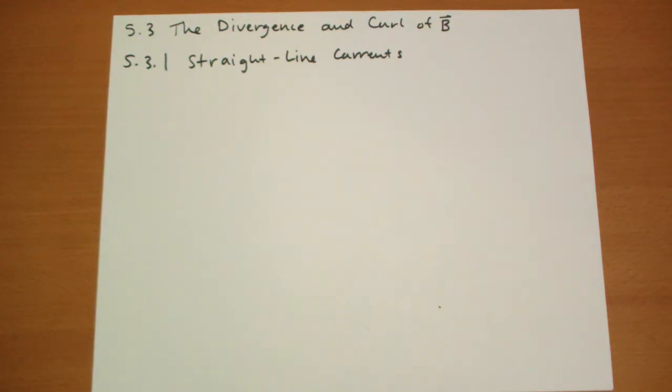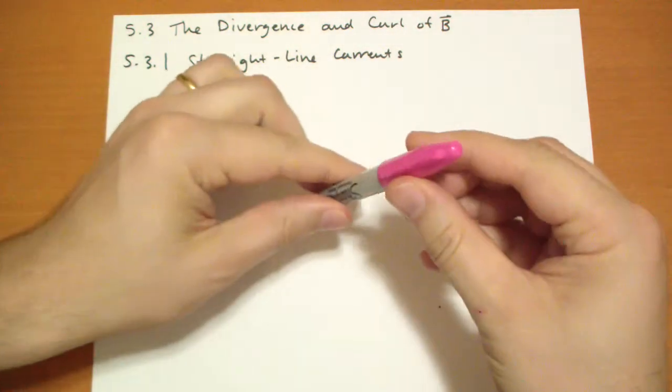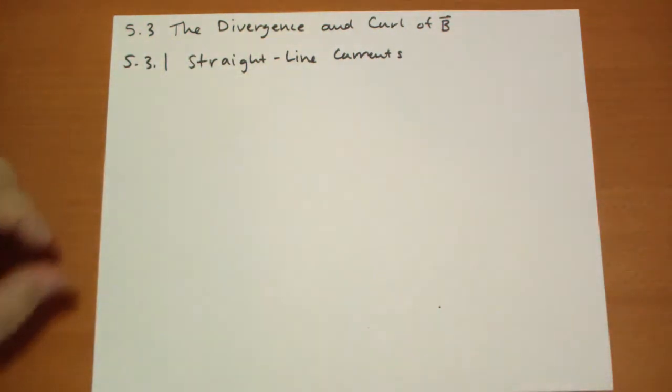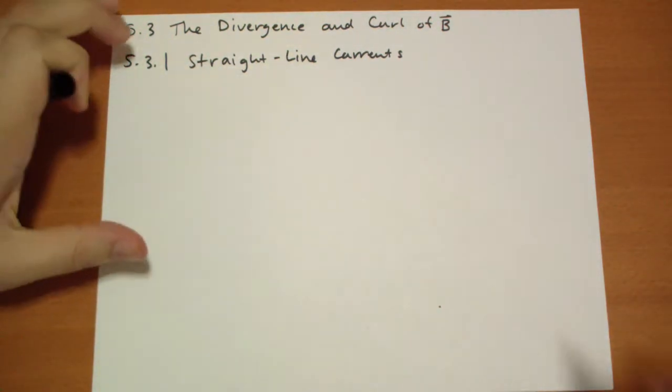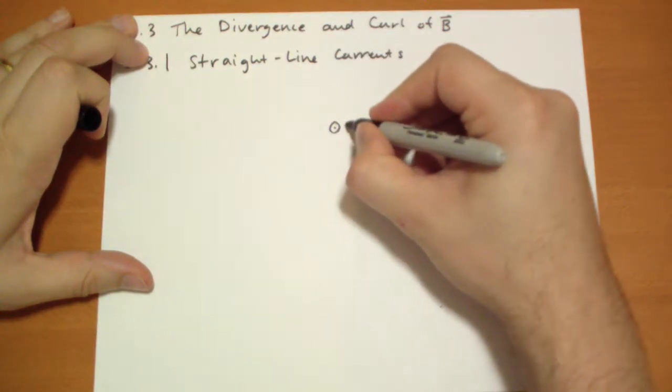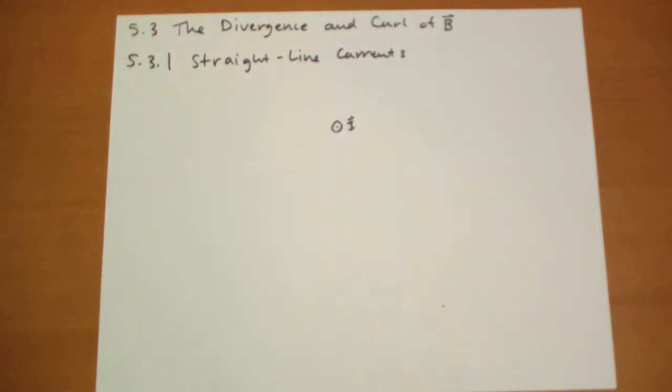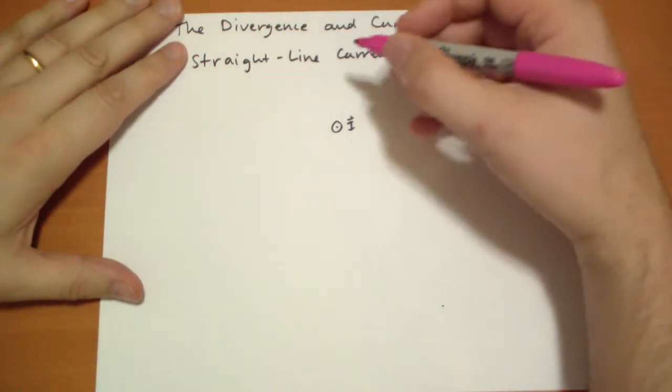So the divergence and curl of B. The first example here is going to help us understand. If you look straight down that wire, the current is flowing basically straight at you. And if you calculated the B vector, let's draw field lines for this. It's going to basically wrap around.